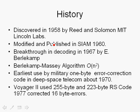A short history of Reed-Solomon codes: they were discovered in 1958 by Reed and Solomon at MIT Lincoln Labs, and slightly modified and published in the SIAM Journal in 1960. A breakthrough in decoding Reed-Solomon codes was achieved in 1967 by Berlekamp, giving us the famous Berlekamp-Massey algorithm, which decodes Reed-Solomon codes with a complexity of order n-squared, where n is the number of coded symbols. The earliest use was by the military with a 1-byte error correction code for deep space telecommunications around 1970.